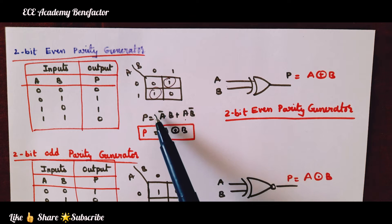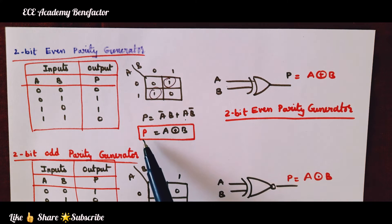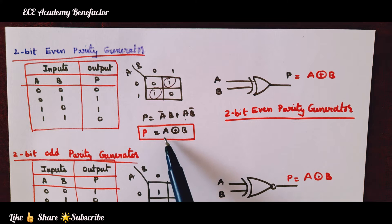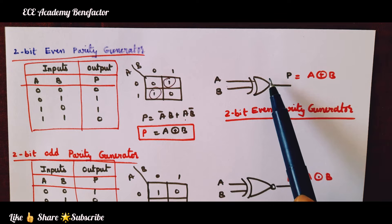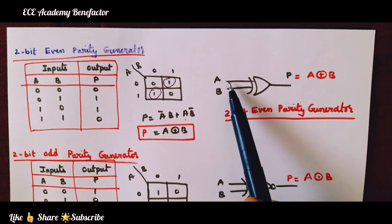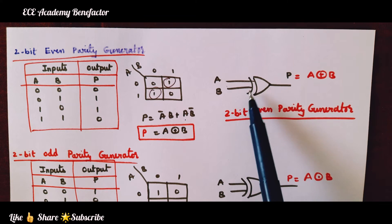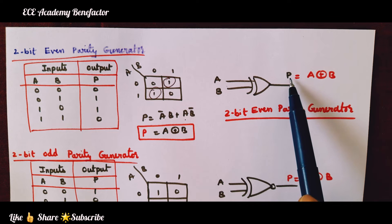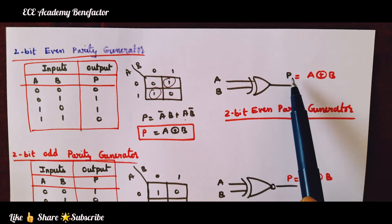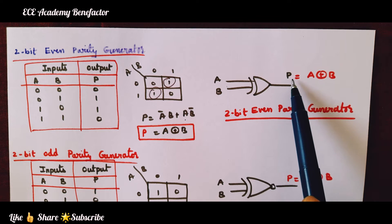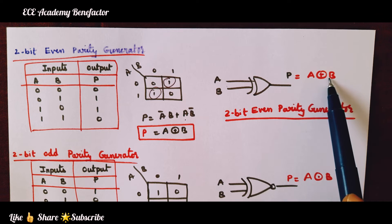So this is an XOR gate. Parity P is equal to A XOR B. How can we implement it? By giving the inputs A and B to an XOR gate we get the 2-bit even parity generator. The equation of 2-bit even parity generator is P equals A XOR B.